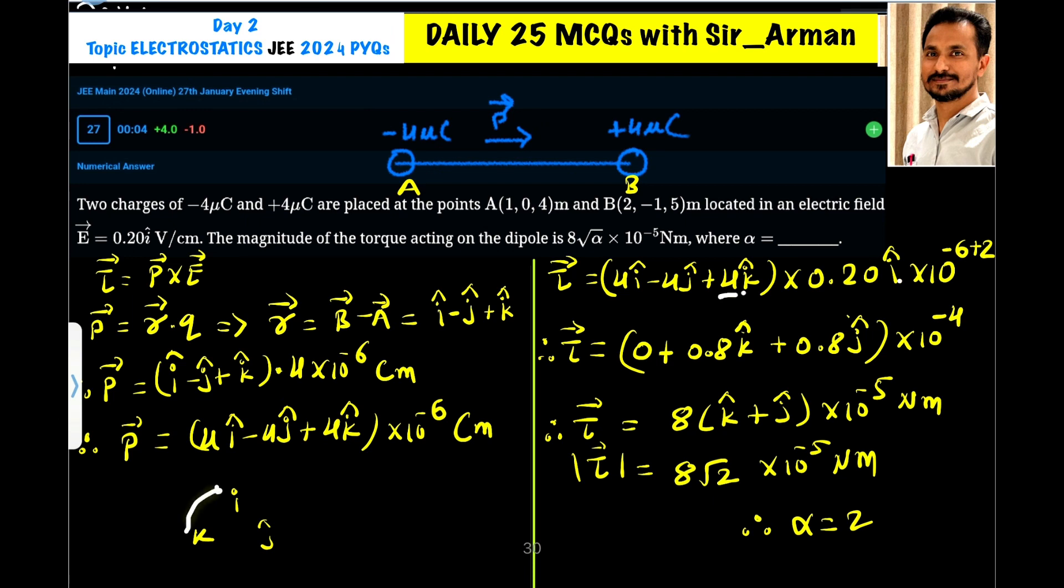And then here it is 4K cross I, so K cross I is J cap, so it is J cap, and 4 into 0.2 is 0.8. And why I have put here 10 raised to plus 2? Because here the electric field E is 0.2 into 10 raised to 2 volt per meter.